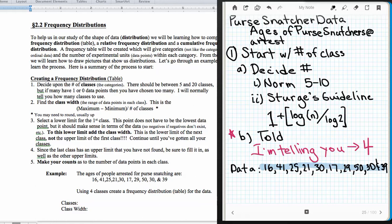Okay, the next thing that we're going to do is actually make a frequency distribution or a frequency table, and we're going to use all those definitions that we came across. We're going to use the purse snatcher data, the age of purse snatchers arrested, to make one of these frequency tables. So first off, what we have to do is we have to start with the number of classes. So there's two things: we can decide on the number or we can be told. I'm going to tell you. I'm going to tell you this time that it's four.